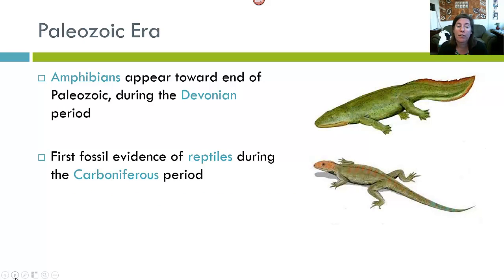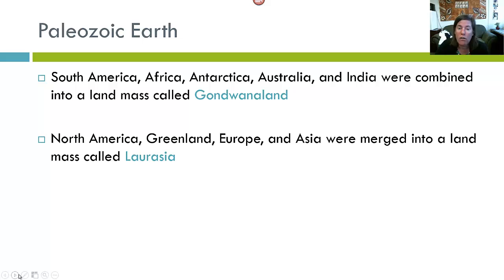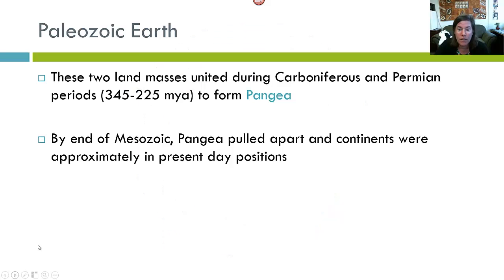Amphibians appear toward the end of the Paleozoic, during the Devonian Period. The first fossil evidence of reptiles occurs during the Carboniferous Period. During the Paleozoic, South America, Africa, Antarctica, Australia, and India were combined into a single landmass called Gondwanaland. North America, Greenland, Europe, and Asia were merged into a single landmass called Laurasia. These two landmasses then united during the Carboniferous and Permian Periods, 345 million to 225 million years ago, to form a huge landmass known as Pangaea.